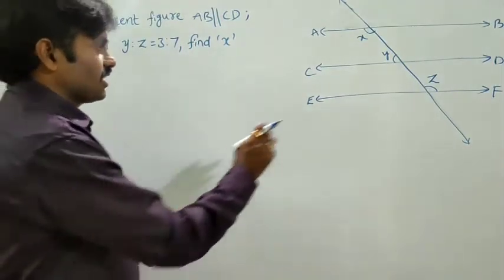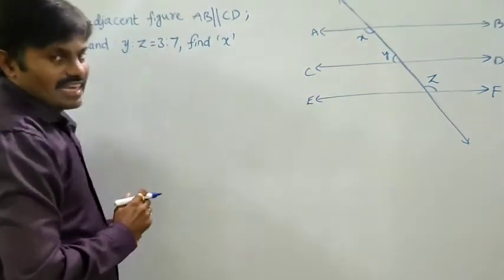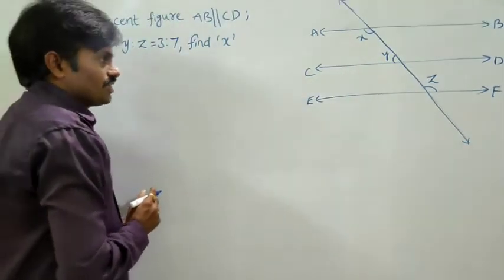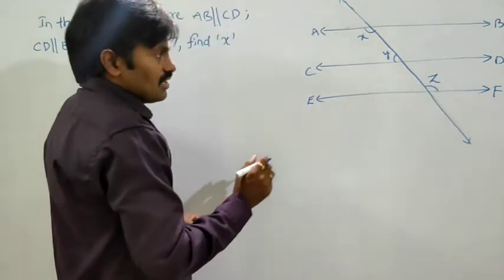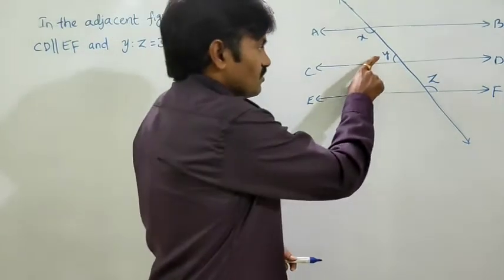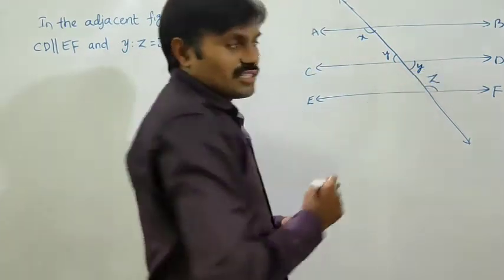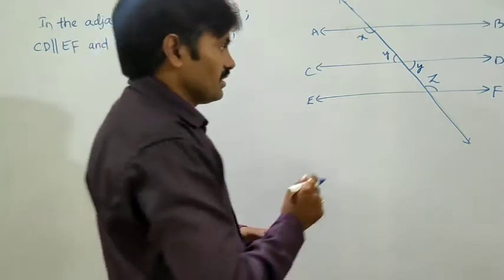So dear children, they are given Y-Z relation so we have to establish a relation between Y and Z angles. How to establish? As we know that vertically opposite angles are equal. So this Y and its opposite are both Y.